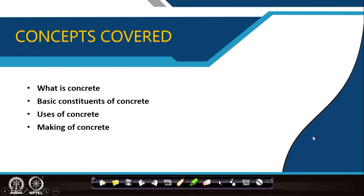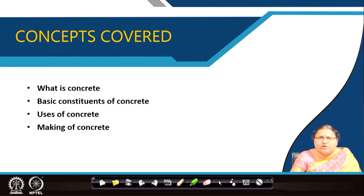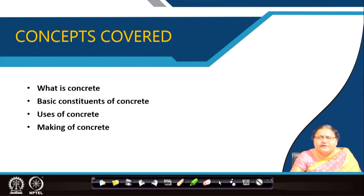If we look into this particular lecture, we will try to cover what is concrete, the basic constituents of it, the use of concrete, and particularly the making of concrete. Why do we discuss what concrete is first? Instead of going to the details of its ingredients, we will go to its ingredients one by one in the later lectures of this module. But presently we will deal with what concrete is and what are the major points of making it, because that is also a very important part in the entire process.